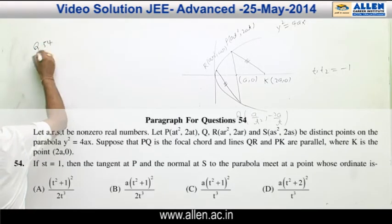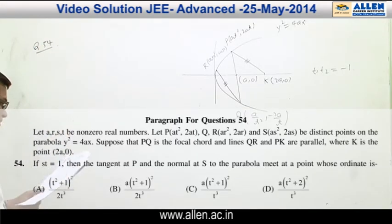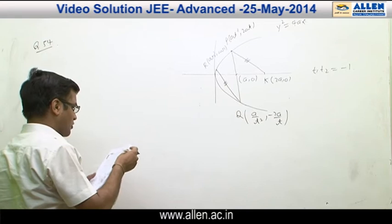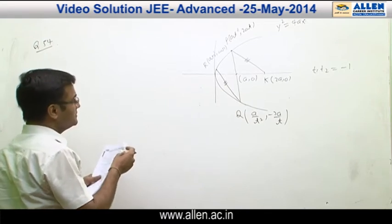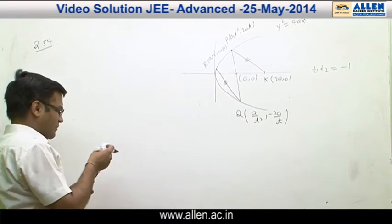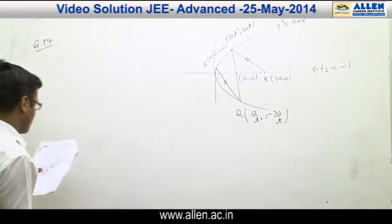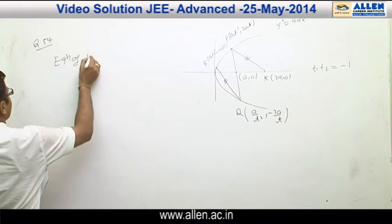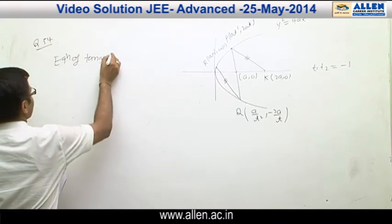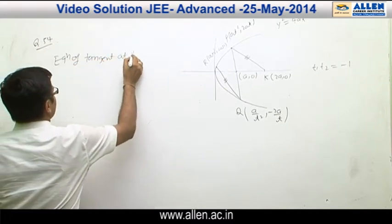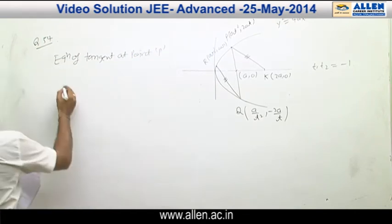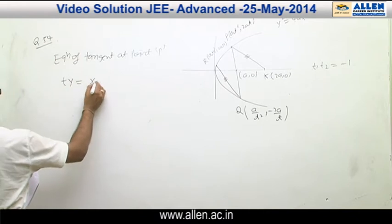Equation number 54: we are given that the tangent at point P and the normal at point S meet the parabola, and we have to find the y-coordinate of that intersection. The equation of the tangent at point P is the standard result: Ty = x + At².